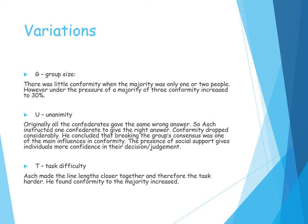To help you remember the variations, use the acronym GUT. There are three variations you need to be aware of. First, group size: there was little conformity when the majority was only one or two people. However, under the pressure of a majority of three, conformity increased to 30%. Three was the magic number — above three it didn't make much difference. When you had four, five, or six confederates it still stayed around 30%. The key change was going from two to three confederates.